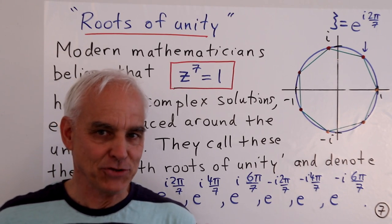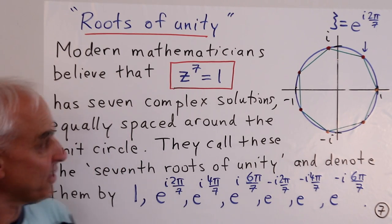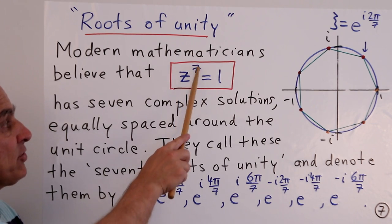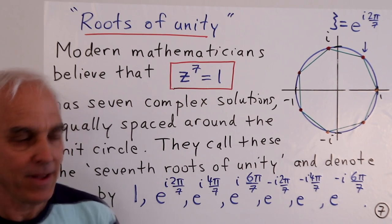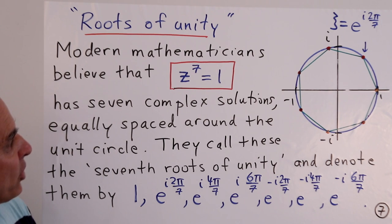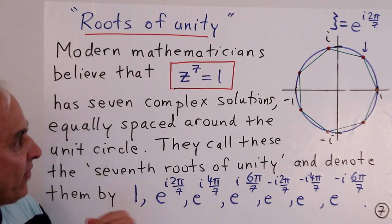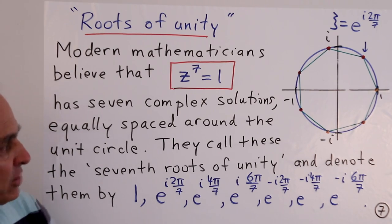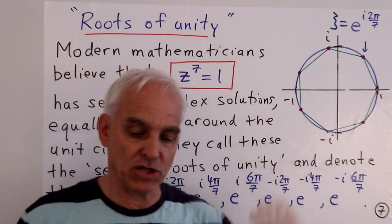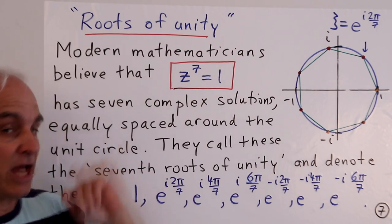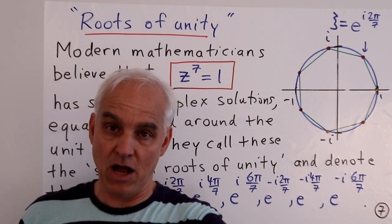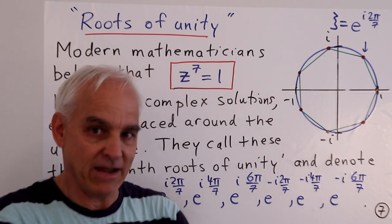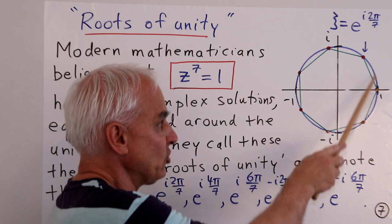Let's now turn to this roots of unity question, which deals with a seemingly simple kind of equation, something like z⁷ = 1. This is a particular example of roots of unity, where the n is 7. So we end up getting the seventh roots of unity, supposedly. Almost all modern mathematicians these days believe that this equation has seven solutions in the complex plane, and that they're equally spaced around the unit circle, a seventh of a turn between any two of them.